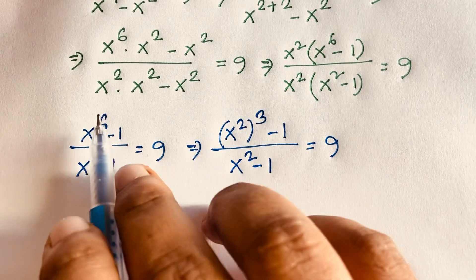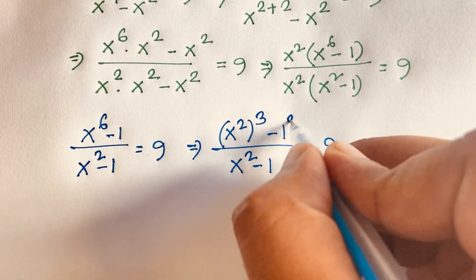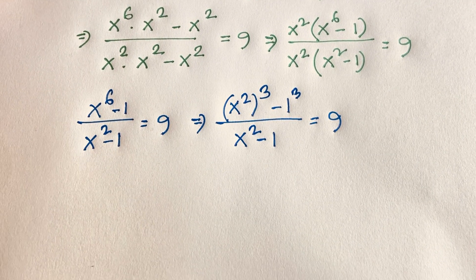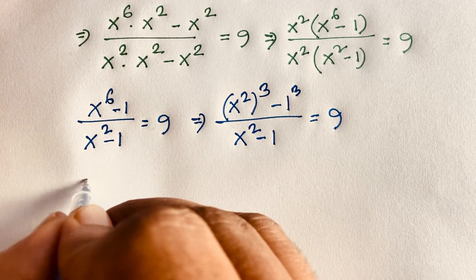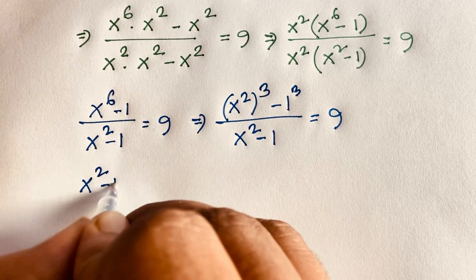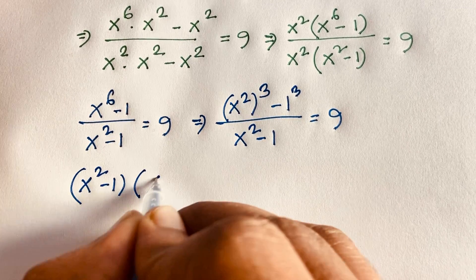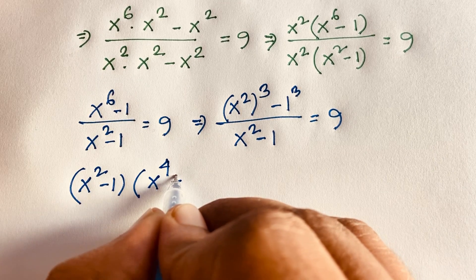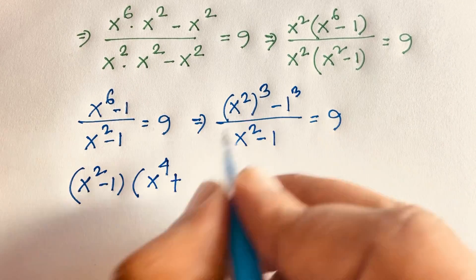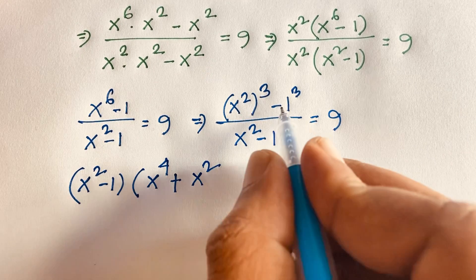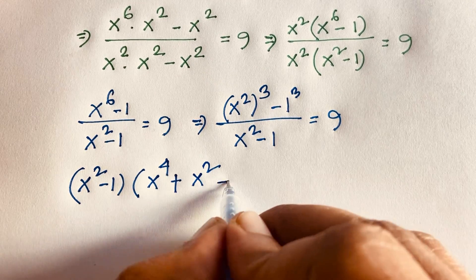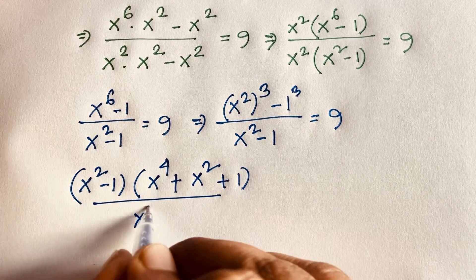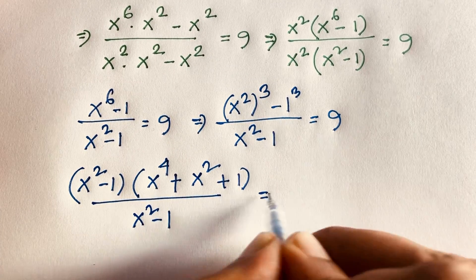Now 2 times 3 gives 6. If I take 1 cubed it will be 1, so using the difference of cubes formula: a cubed minus b cubed equals (a minus b)(a squared plus ab plus b squared). So x squared becomes x to the power 4, plus x squared times 1 which is x squared, plus 1 squared which is 1, all over x squared minus 1, equal to 9.